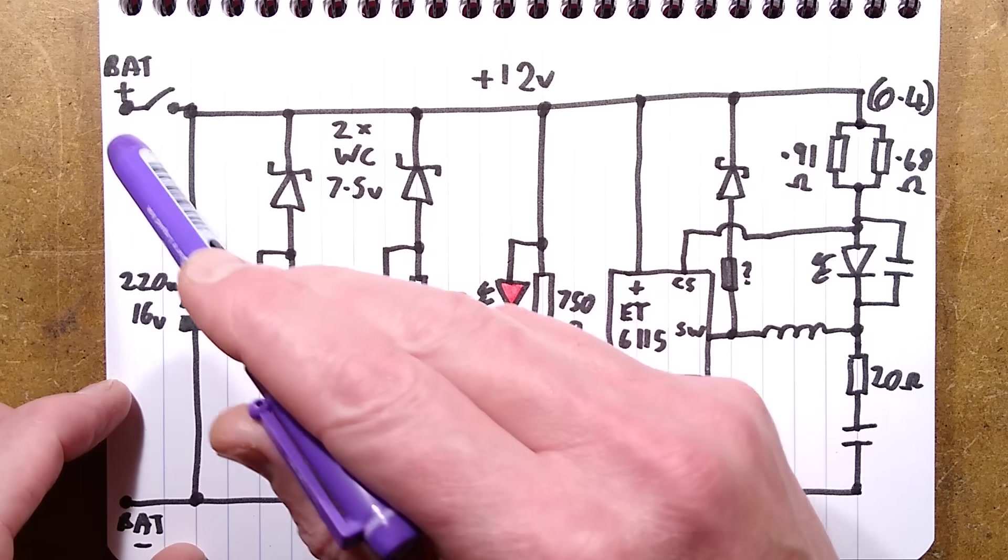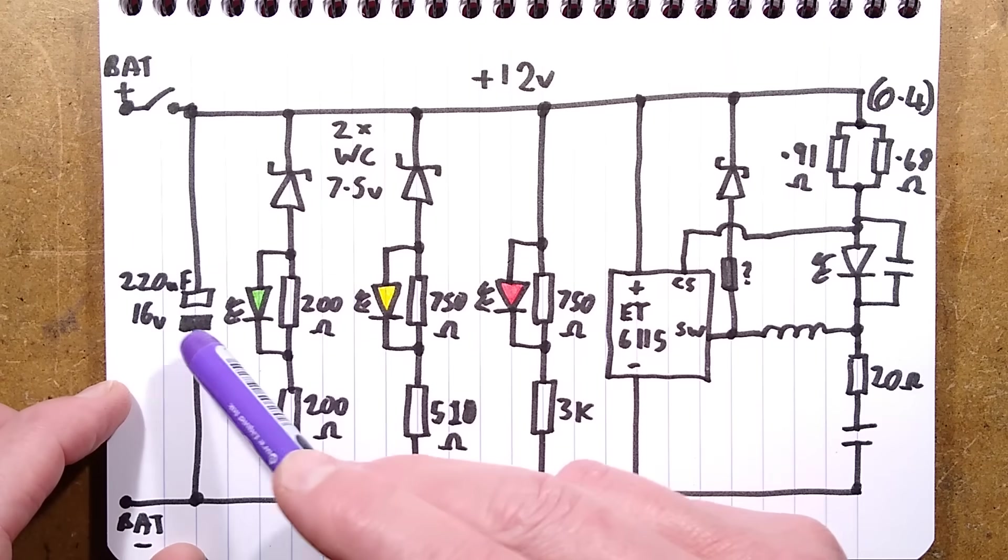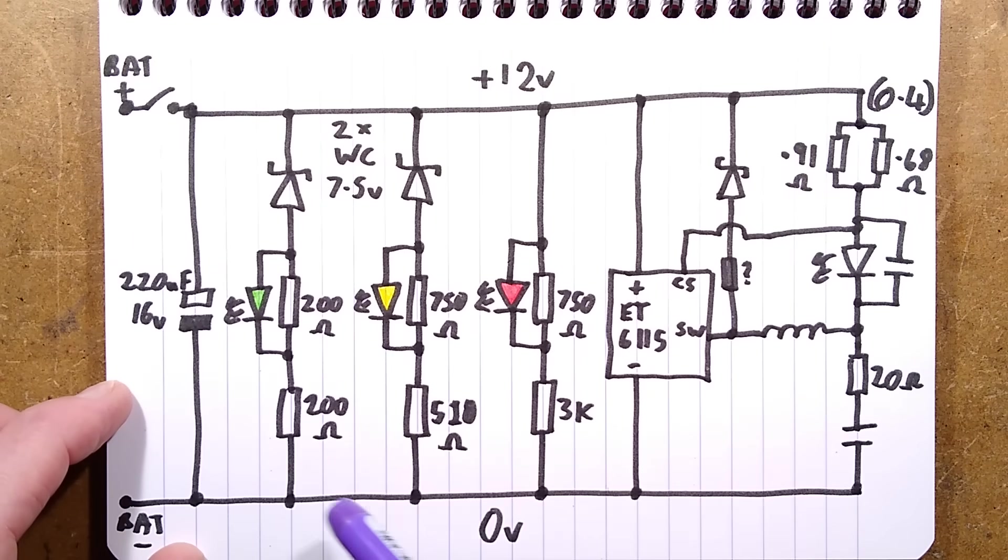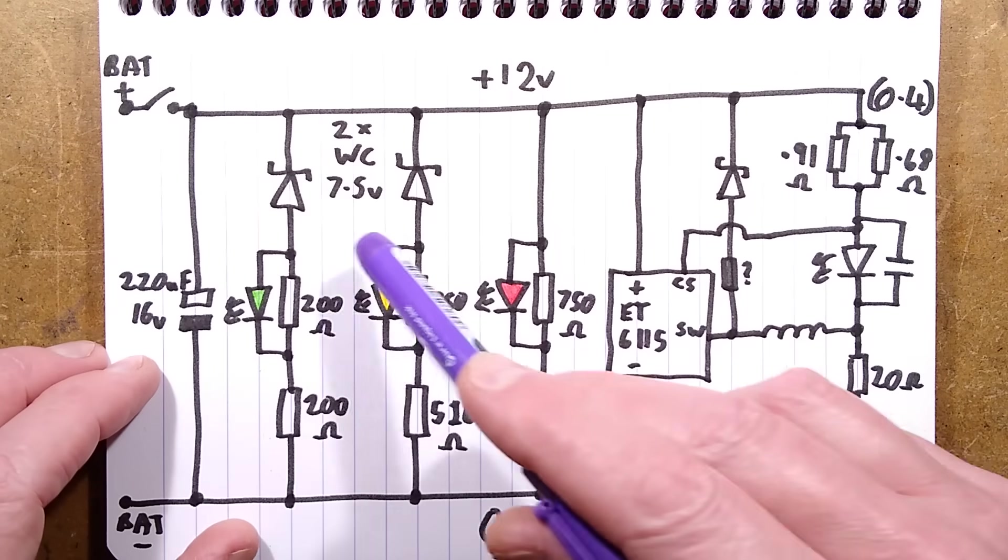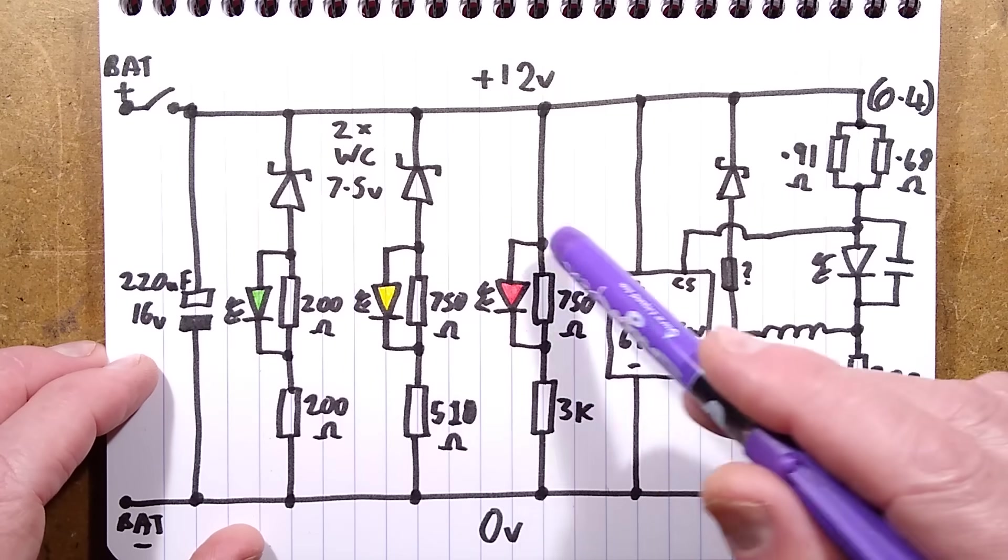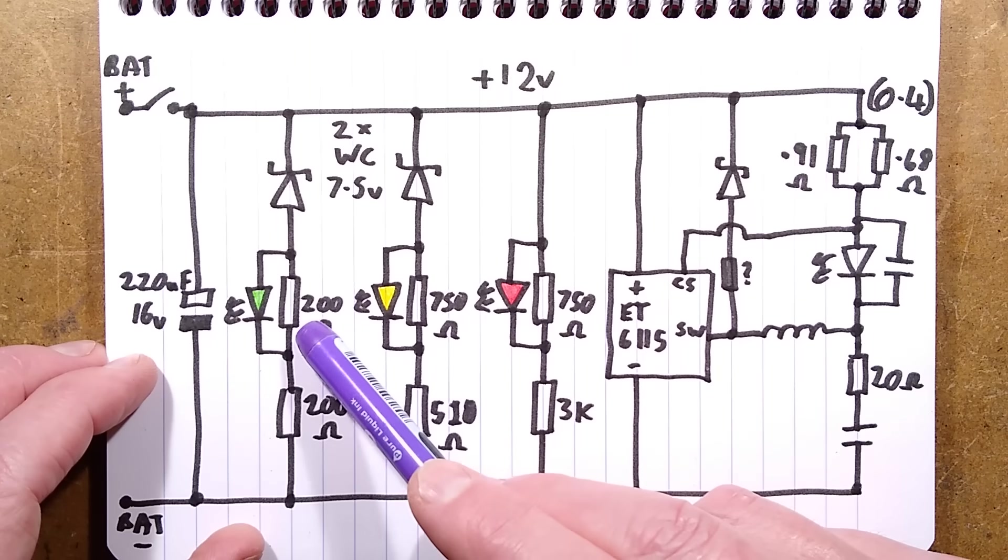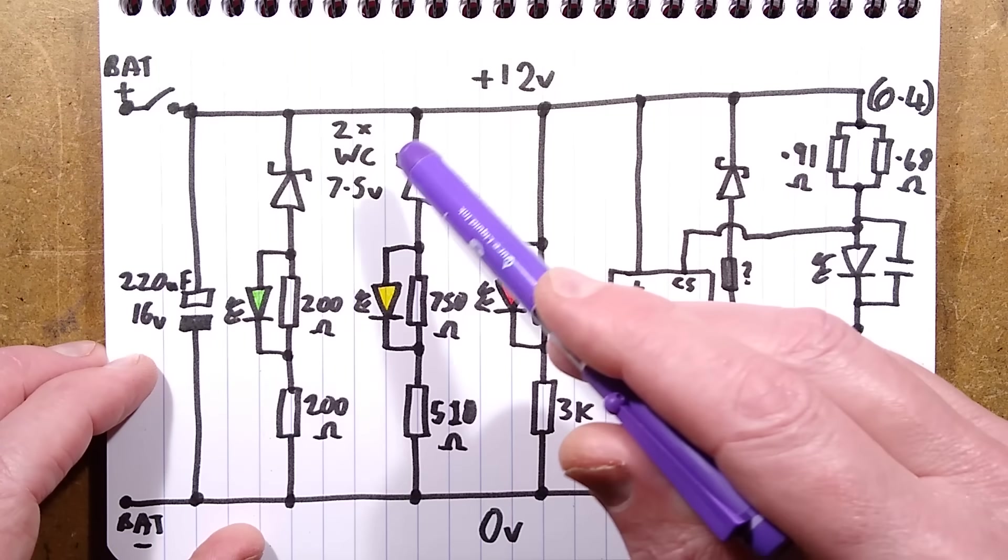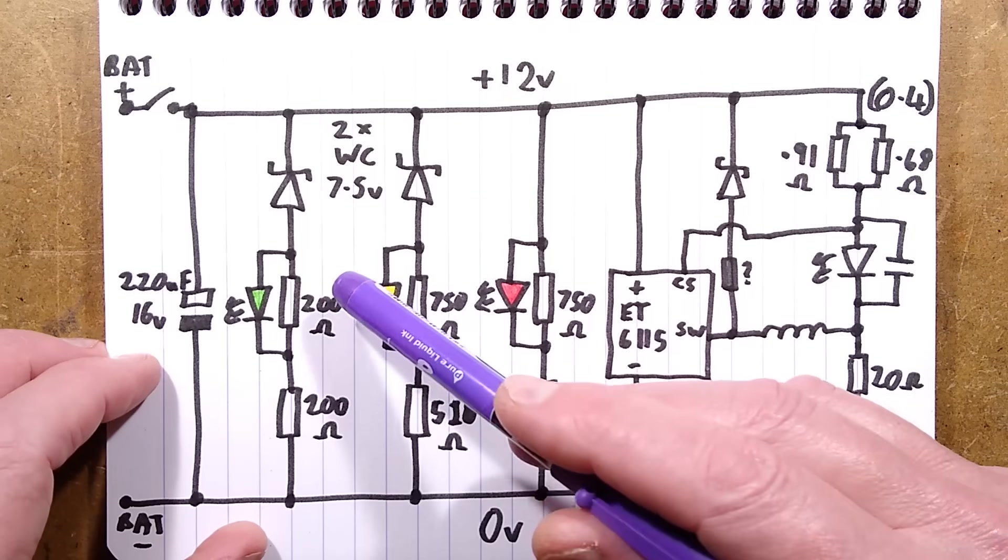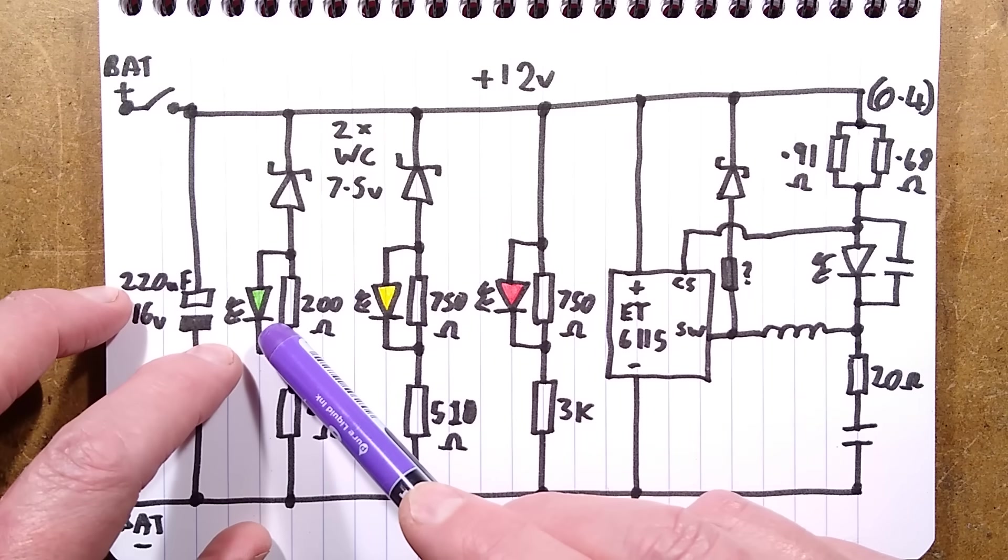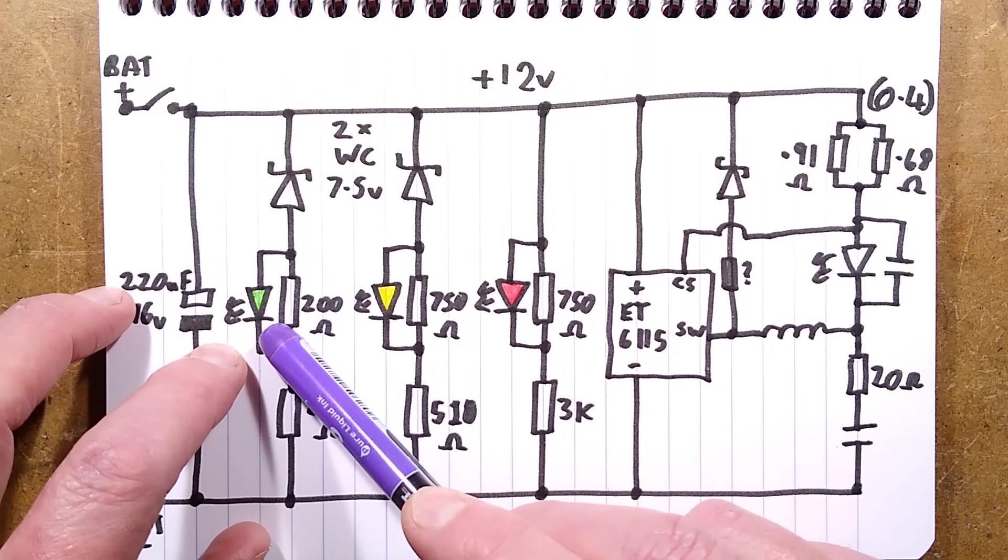Anyway, here is the battery connect. There is the on-off switch. There is the 220 microfarad capacitor. Then there is the battery level detection circuit, which is basically a series of voltage dividers with an LED across one of the divider resistors and then a couple of zeners to actually scale it up. So it has to be quite high voltage before the green will light, almost the full 12 volts.